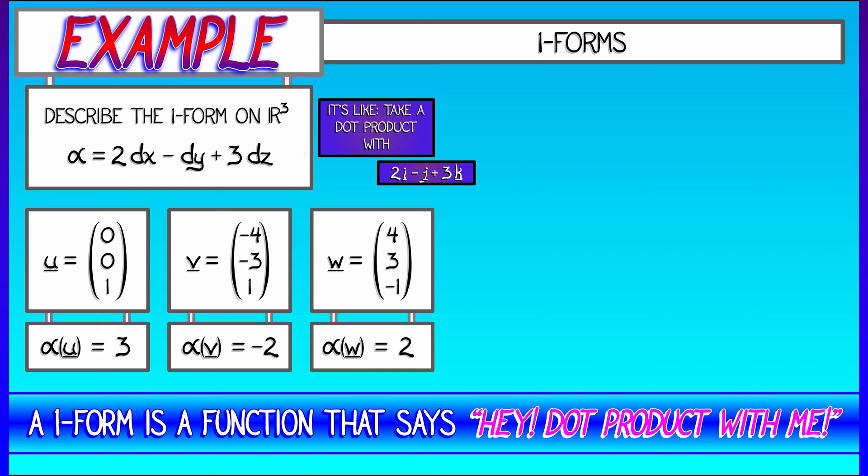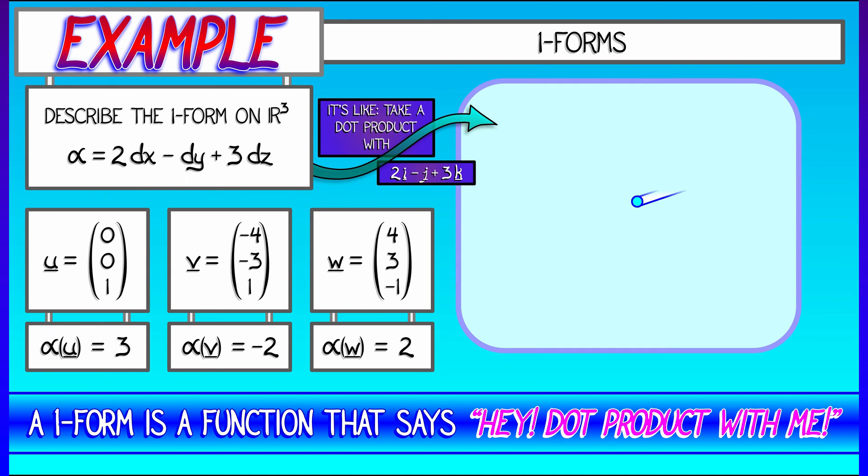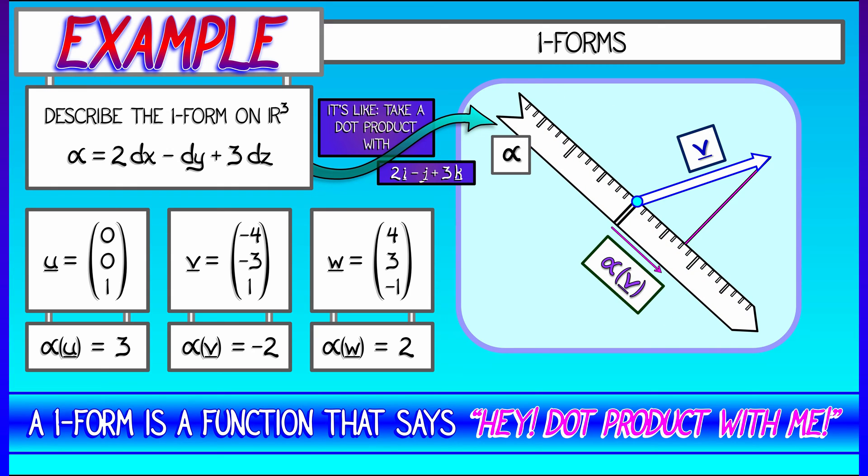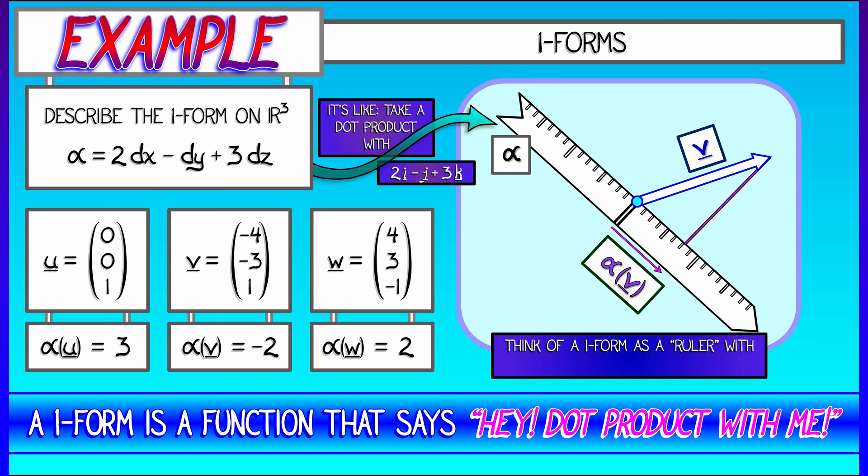And in fact, if you go way back to volume one, when we first introduced dot products, one interpretation of a dot product was as an oriented projected length along a certain direction. And that's one good way to think about what a one-form is. I like to think of it as something like a ruler, where there's a direction against which you're measuring the projected length of some vector v that you feed it. But this one-form also has a scale on it and it has an orientation. You can get a positive or a negative number as a result.